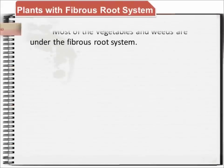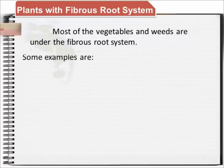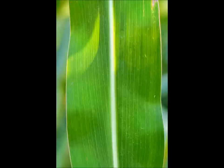Most vegetables and weeds have fibrous roots. The leaf of a plant in this root system shows parallel venation, which has leaf veins going in one direction.